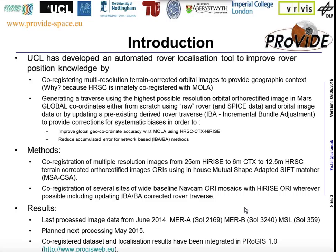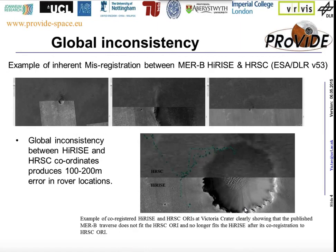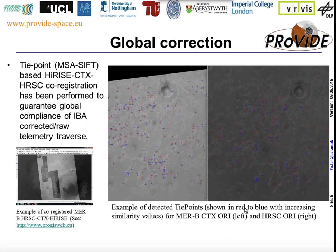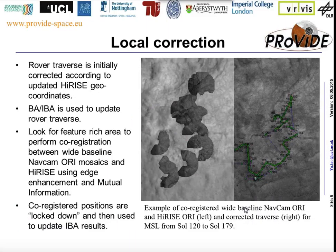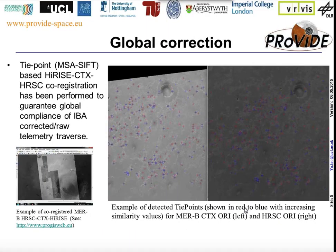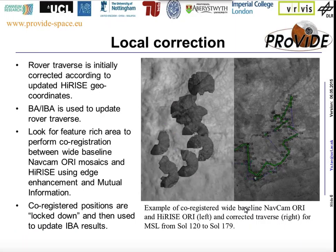Here you can see the results of the processed rover traverse from MER and MSL. This is the misalignment, and this is the global correction. This is an example of CTX and HRC, and this is an example of the co-registered orthorectified baseline — a NavCam wet baseline mosaic for the MSL mission. We co-registered several positions and therefore corrected the bundle-adjusted rover traverse.